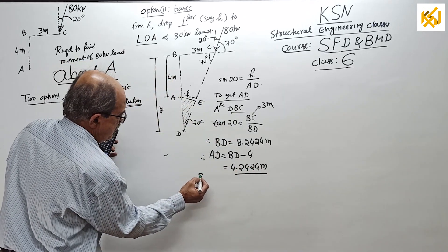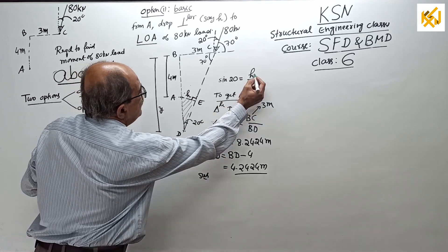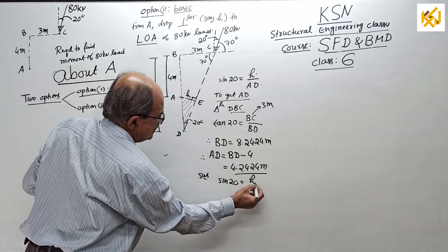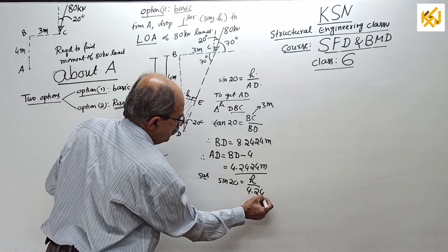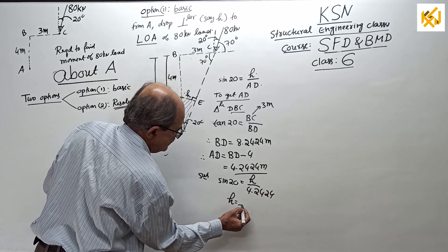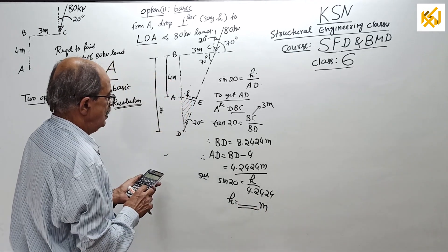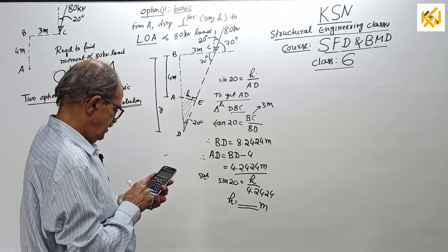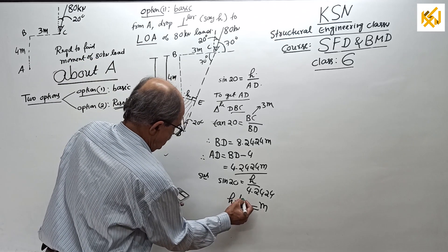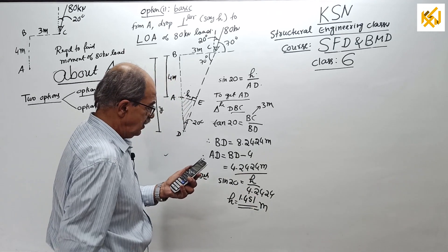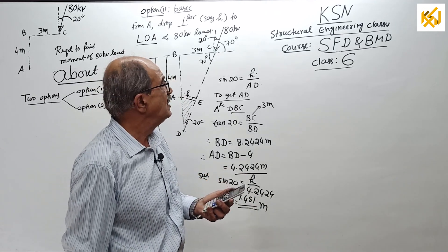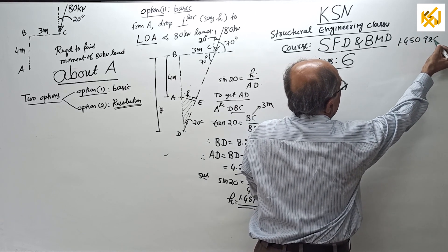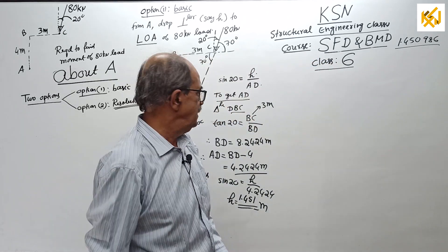Substituting: sine 20 = H / 4.2424, giving H = 4.2424 × sin 20 = 1.450986 meters. I will round to the third decimal — H = 1.451 meters.